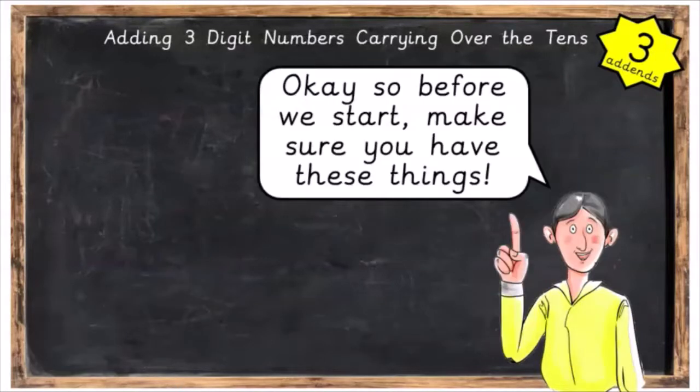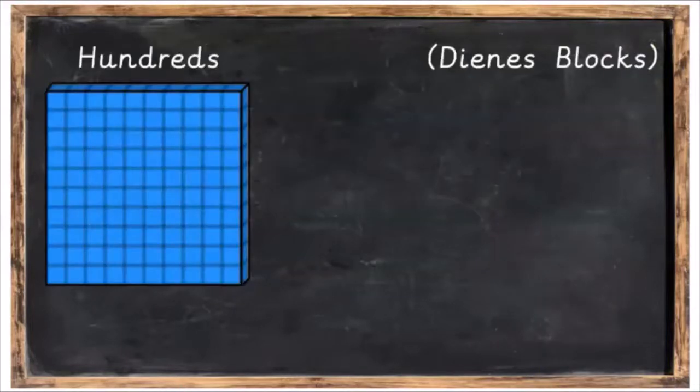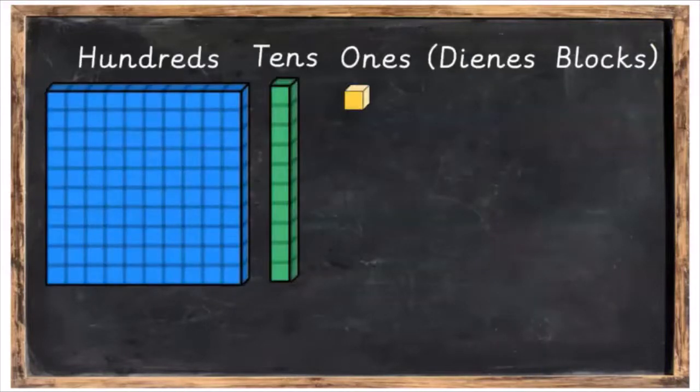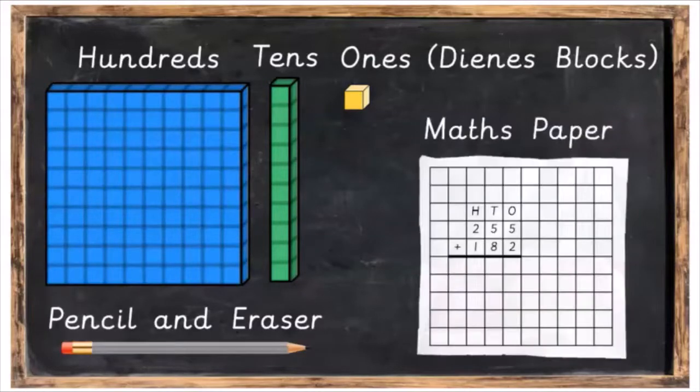Before we start, make sure you have these things. You're going to need some Dean's blocks: some hundreds, some tens and some ones. You're going to need a pencil and an eraser and some maths paper.